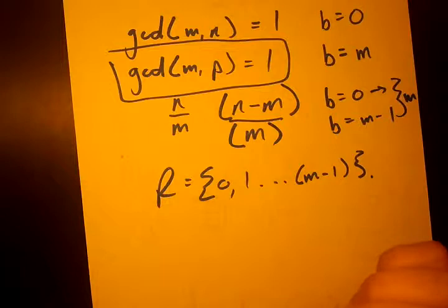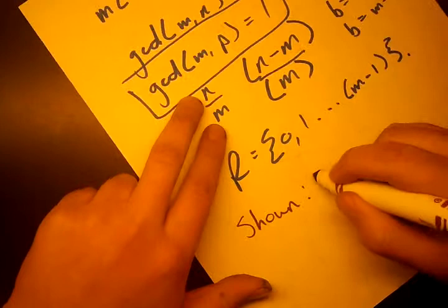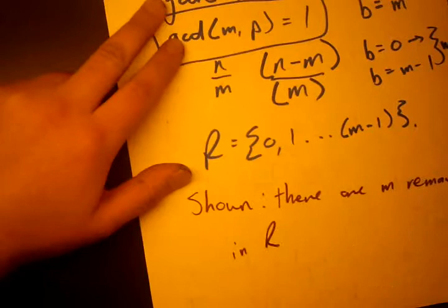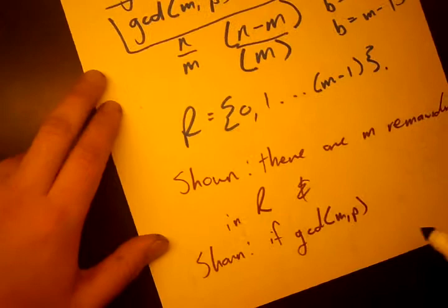There's only one thing we have still to prove. We must prove that none of these remainders are the same, right? Because we've shown, let's write down our explicit result, shown that there are M remainders in R, the remainder set.